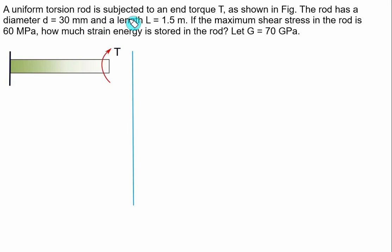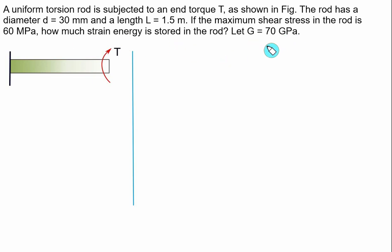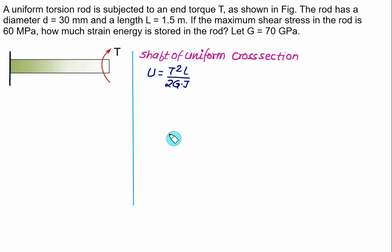A uniform torsion rod is subjected to an end torque T, as shown in the figure. The rod has a diameter equal to 30 mm and length L equal to 1.5 meters. The maximum shear stress in the rod is 60 MPa; we need to find how much energy is stored in the rod. The value of G is given as 70 GPa. Since we have a uniform rod, the energy stored is given as T² × L divided by 2GJ, where J is the polar moment of inertia.